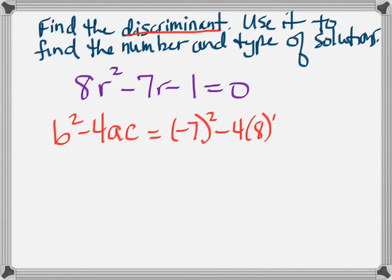So b in this case is negative 7, so I have negative 7 squared minus 4a, a is 8, and c is negative 1. So simplifying that, I get 49 plus 32, which is 81.